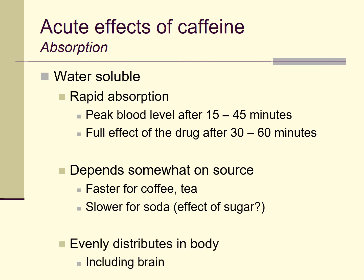Once you've absorbed caffeine, it fairly evenly distributes throughout the body. That's actually important because the effects we see from caffeine occur all around the body, both in the periphery and in the central nervous system. That's in part because caffeine can get almost anywhere it needs to go in your body because it's so water-soluble.